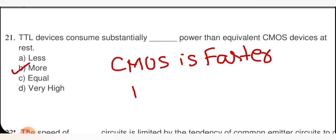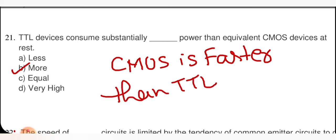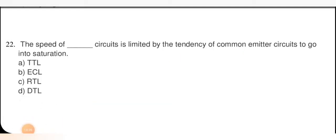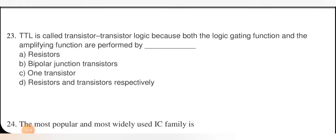The speed of TTL circuits is limited by the tendency of common emitter circuits to go into saturation. In TTL we use multi-emitter transistors; when in saturation, minority carriers store charge in the collector region, slowing the speed. So right answer is TTL. TTL is called transistor-transistor logic because both the logic gating function and the amplifying function are performed by BJTs. Right answer is bipolar junction transistor — option B.